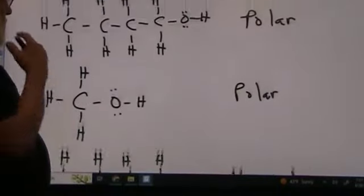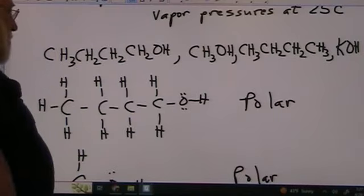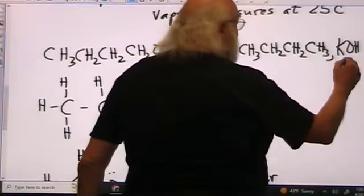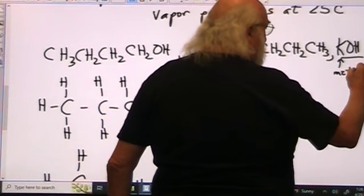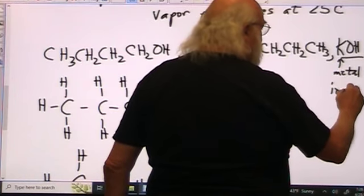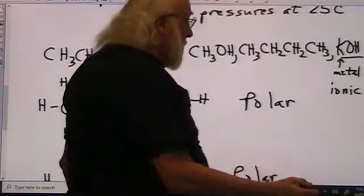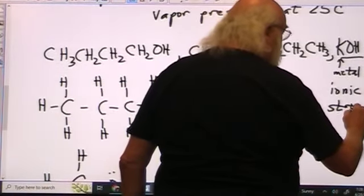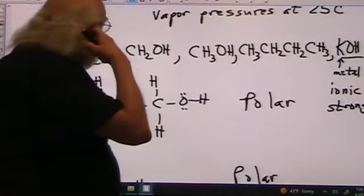And then finally, the last one is KOH. Now, this has got an OH like this right here, but this, remember, has a metal. That makes this ionic. And from what we talked about in acids and bases, this is a strong base. This is one of those nine strong bases that we have.